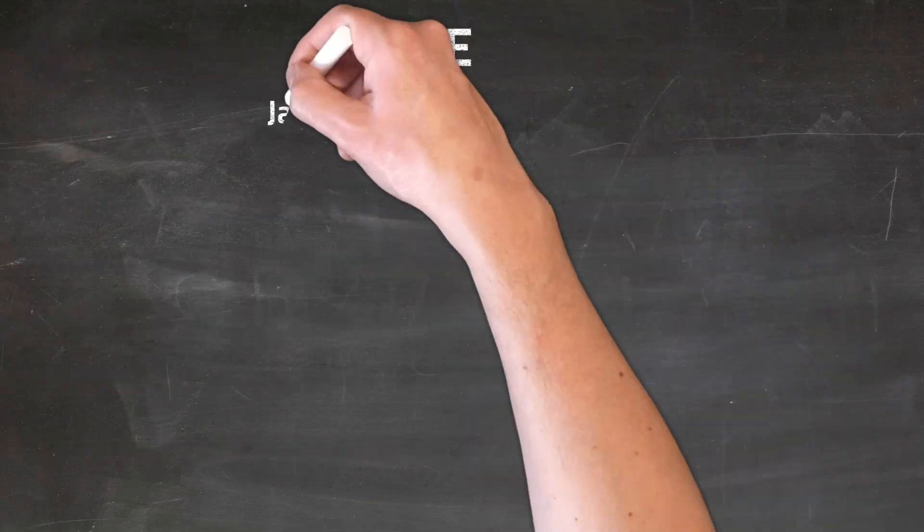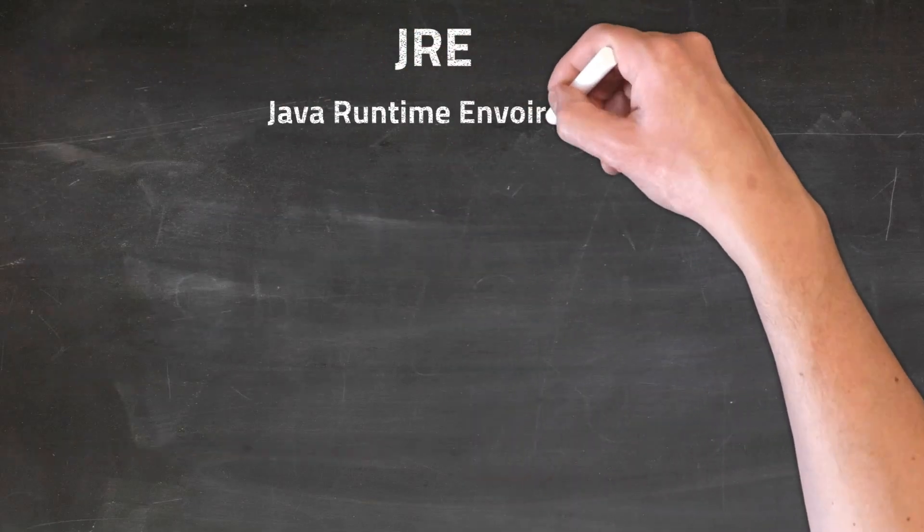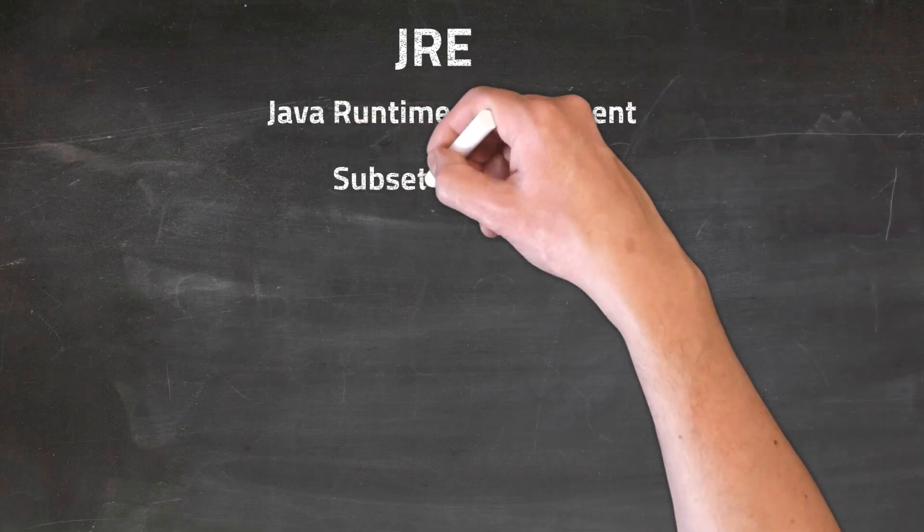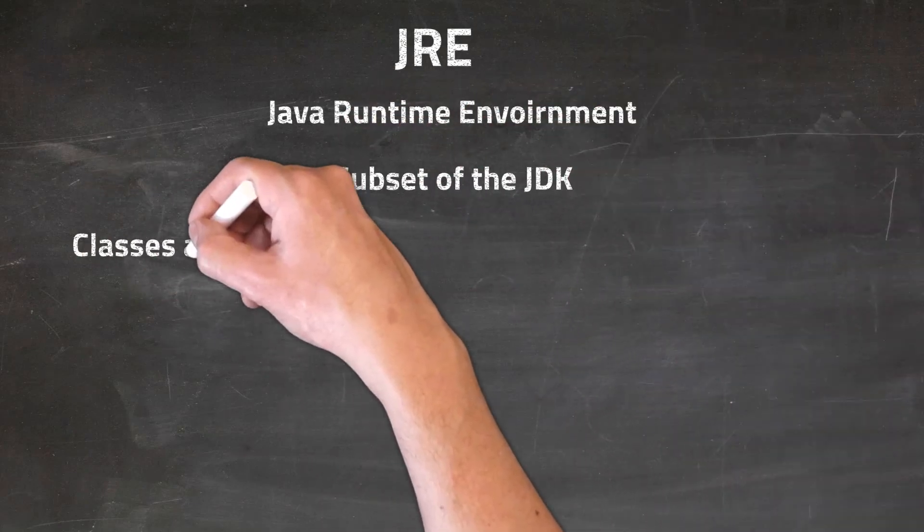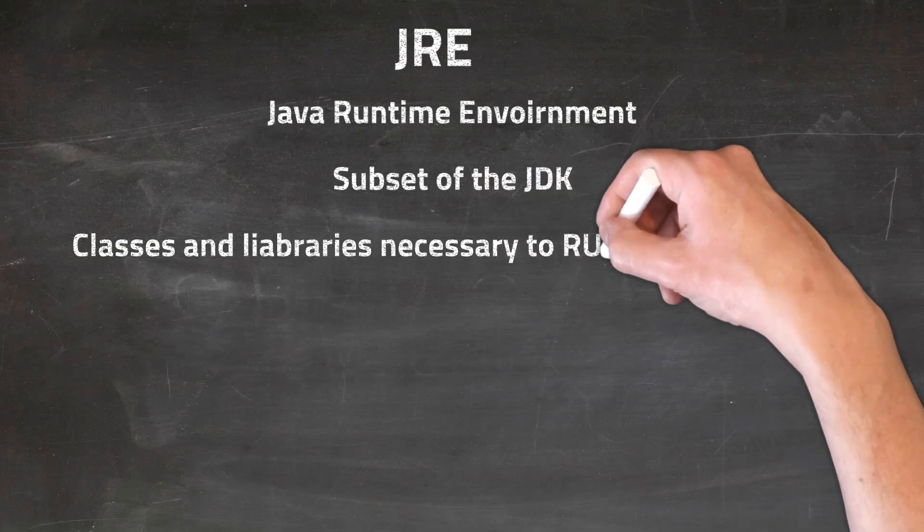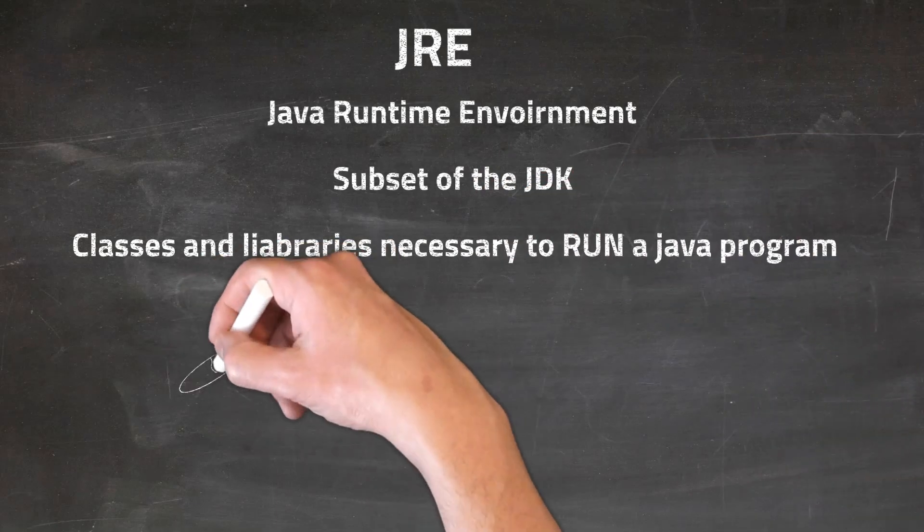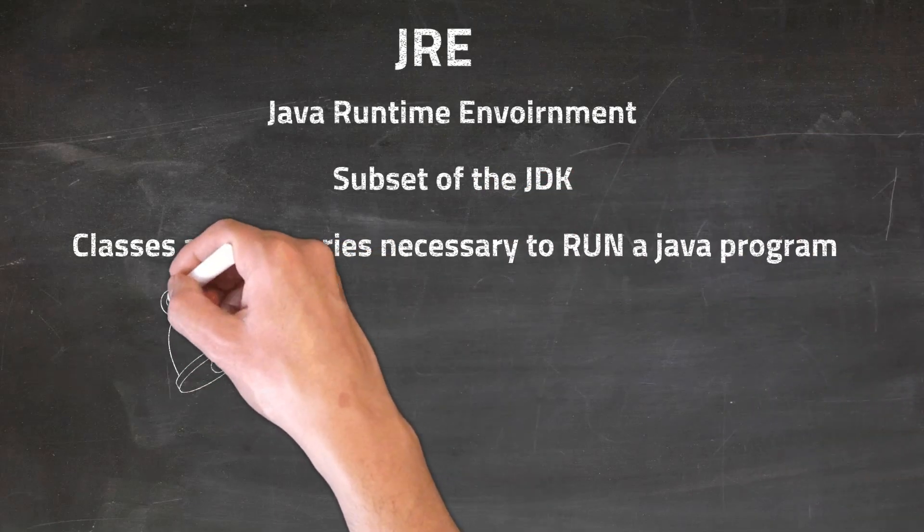Now comes the JRE. JRE stands for Java Runtime Environment. It is a subset of the JDK. It contains classes and libraries necessary to run a Java program. The important thing to note here is that it is run, not compiled.